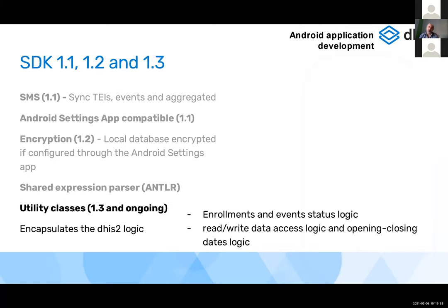Utility classes are coming from version 1.3 and it's an ongoing process. DHIS2 has some complex logic that previously lived in the app, but we are moving more and more of it into the SDK. For example, adding or modifying an event with all the logic around enrollment status, completion date, and read/write sharing access — all this complexity is now managed by the SDK.